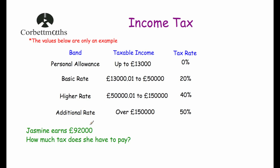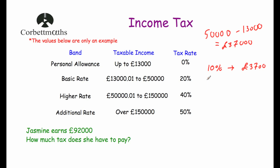Our next question: Jasmine earns £92,000 — how much income tax does she have to pay? Looking at our table, on the first £13,000 she pays no income tax. Then between £13,000 and £50,000 she pays 20%, and between £50,000 and £92,000 she pays 40%. First, let's work out the 20% portion: £50,000 minus £13,000 equals £37,000. 10% of £37,000 is £3,700, so 20% is £7,400. So she pays £7,400 on her earnings between £13,000 and £50,000.